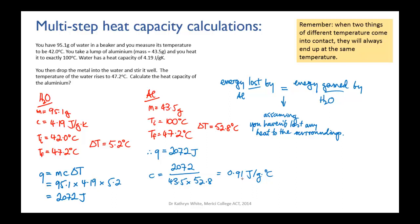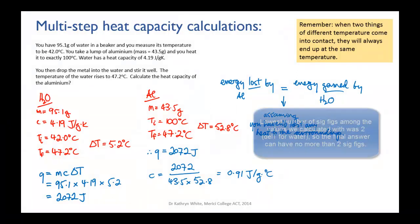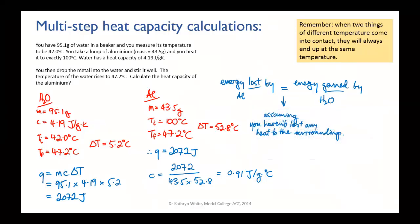Now let's check significant figures. The value 0.91 is given to two sig figs. Looking back at the water values: mass was three sig figs, heat capacity three, but delta T came out to two sig figs because when you subtract 42.0 from 47.2 the rule is lowest number of decimal places, leaving two sig figs. For aluminium: mass three, temperatures three, delta T three. So two sig figs is correct, and if you check online you'll confirm that is the accepted heat capacity of aluminium.